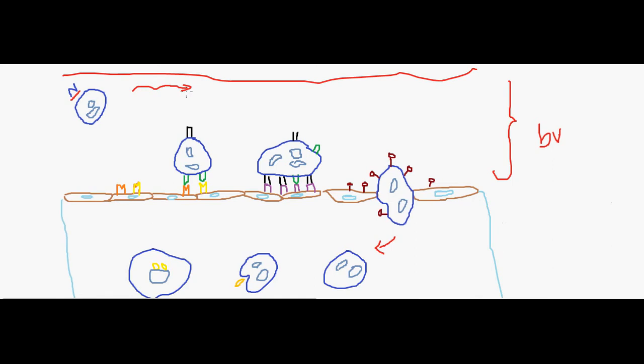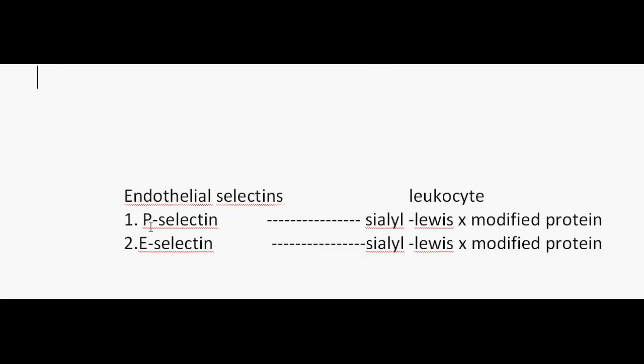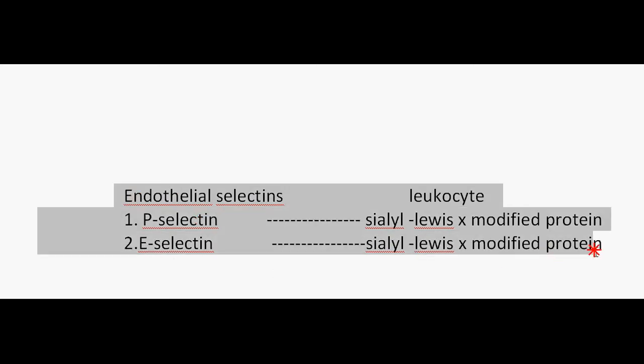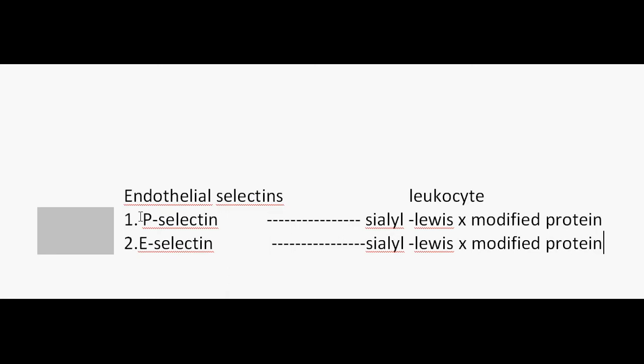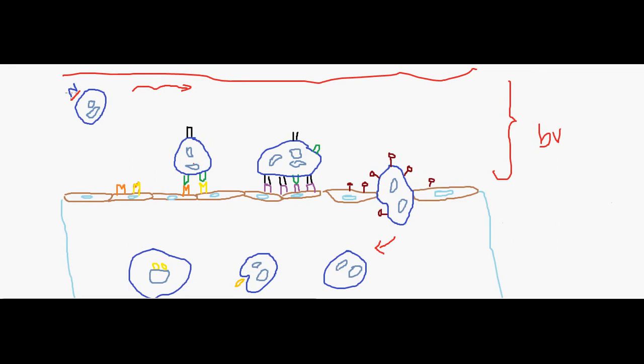The second important process in the first stage is rolling, which is mediated by a group of proteins called selectins found on both the endothelial surface and the leukocyte surface. When endothelial cells are activated by mediators like cytokines, leukocytes express adhesion molecules to the endothelium through which they attach loosely. On the endothelial surface we have P-selectin and E-selectin.